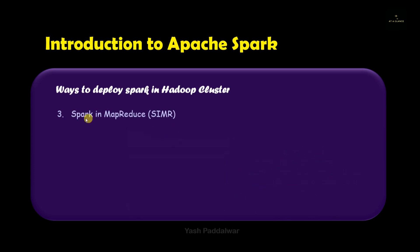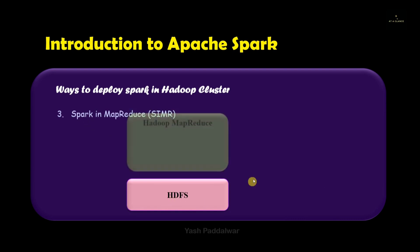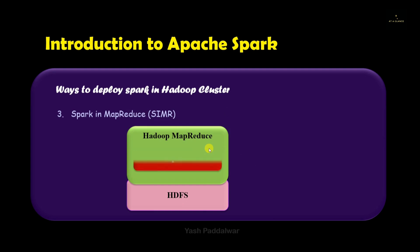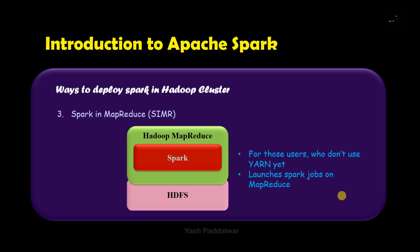The next way to deploy Spark inside the Hadoop cluster is SIMR — Spark in MapReduce. In this architecture, HDFS sits at the base, Hadoop MapReduce comes on top of that, and Spark gets its place inside the Hadoop MapReduce cluster — hence the name SIMR. This way is particularly for users who don't use YARN yet; in the earlier generation of Hadoop, YARN was not introduced. In this way, Spark jobs are launched on MapReduce.